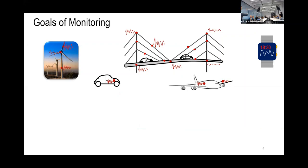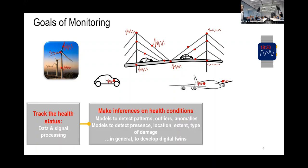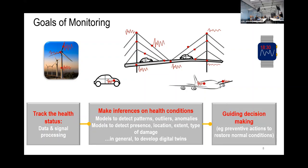When we look at different types of structure, what we want to do is track the behavior of the structure and make inference: is there damage? Where is it? What is the extent? In general, what we'd like to do is build a digital twin. The main reason is guiding decision making — this is very different from general-purpose machine learning. We are taking decisions that might say we have to close the bridge or do maintenance, and those decisions can be very costly and can affect people's lives.